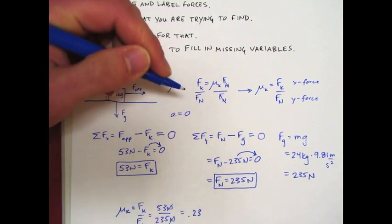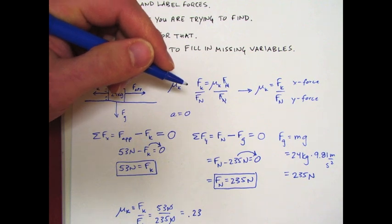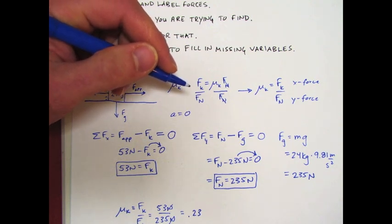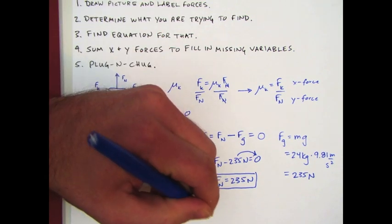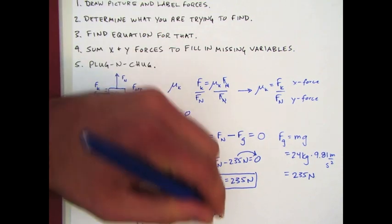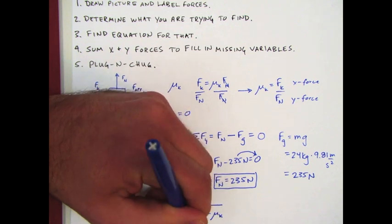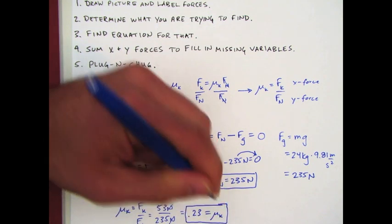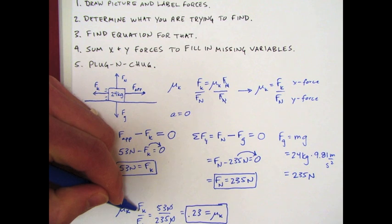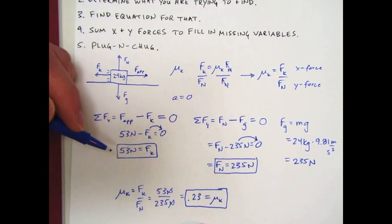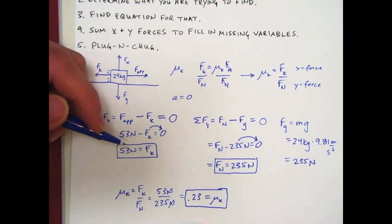And you might say well 0.23 what? Well that's just it. There is no unit for the coefficient of kinetic friction or static friction for that matter. It is a unitless quantity, basically because it's just a ratio between the force of kinetic friction and the normal force. So there you go.